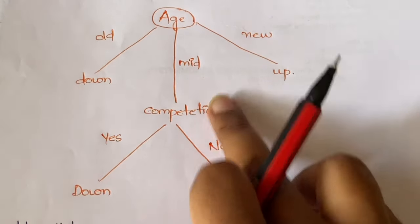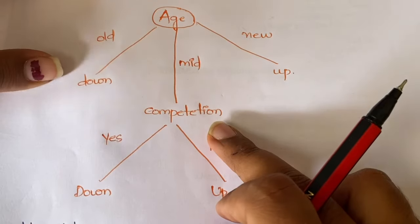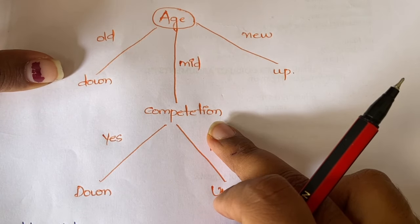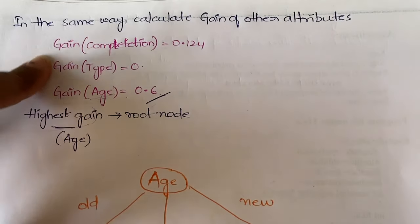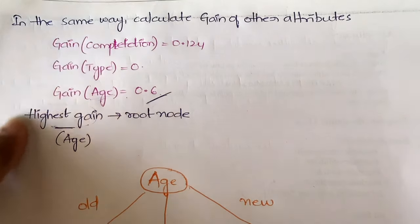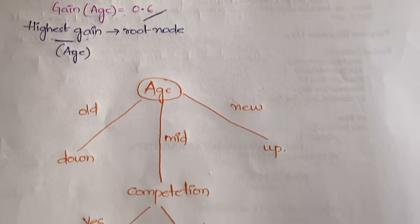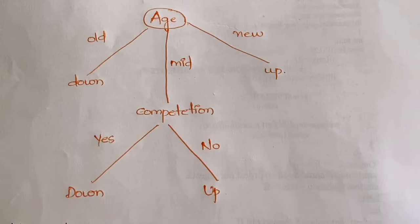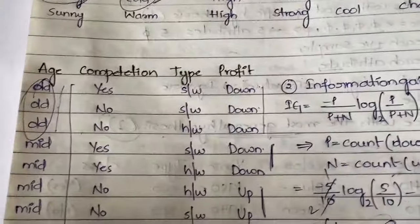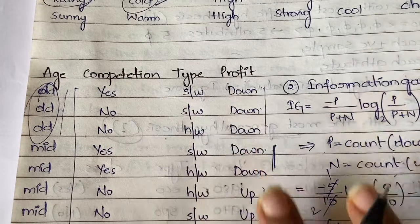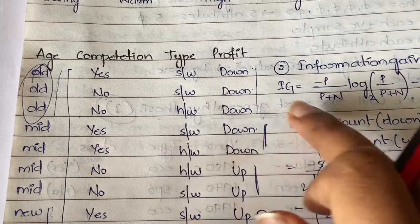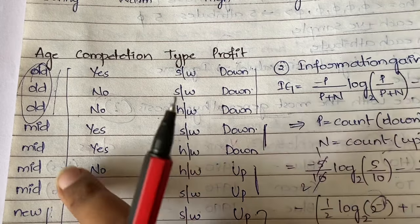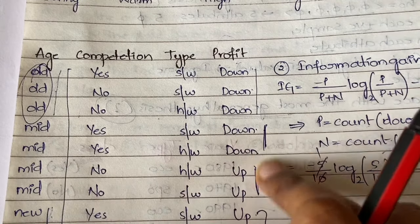That node is competition. Why did we take competition and not type? After age, the next highest attribute is competition. So you take competition, which has values either yes or no. In mid, if the competition value is yes, it is taken as down. If the value is no, it is taken as up.